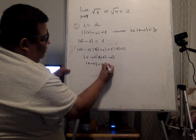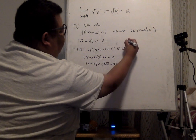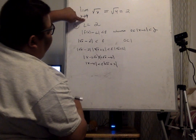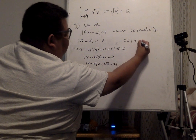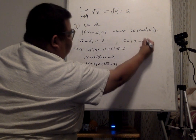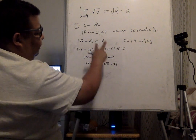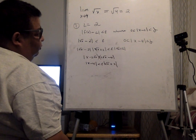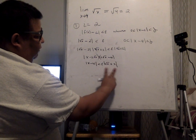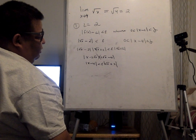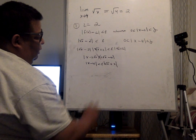This is less than epsilon times (√x + 2). Notice this looks like what we want: |x - 4| less than delta, where x - 4 corresponds to x minus c, and c is 4 — the number x approaches. We're trying to find delta by relating this expression with that expression. Remember, epsilon is a number and delta is a number as well.